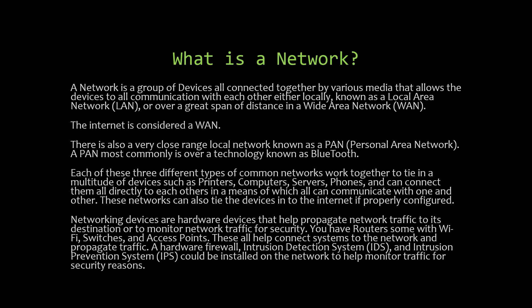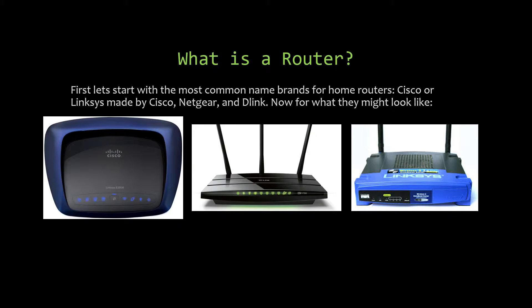These networks allow all devices to communicate with one another and can also tie into the internet if properly configured. Networking devices are hardware that help propagate network traffic to its destination or monitor it for security. You have routers — some with Wi-Fi built in — switches, and access points. A hardware firewall, intrusion detection system (IDS), or intrusion prevention system (IPS) can also be installed for security.